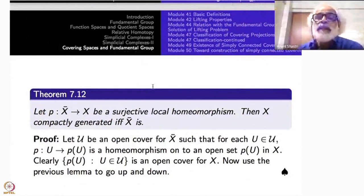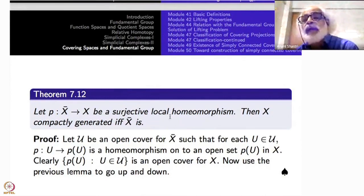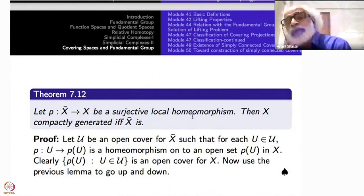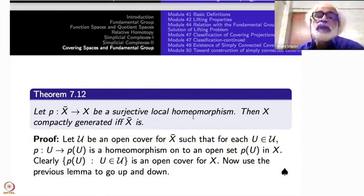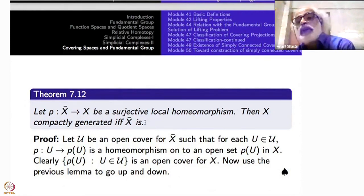Now take any covering X̄ to X. Instead of just coverings, I am proving a more general result: take a surjective local homeomorphism. Then X is compactly generated if and only if X̄ is compactly generated. To see that, start with an open covering for X̄ such that on each U in U, the map P from U to P(U) is a homeomorphism.